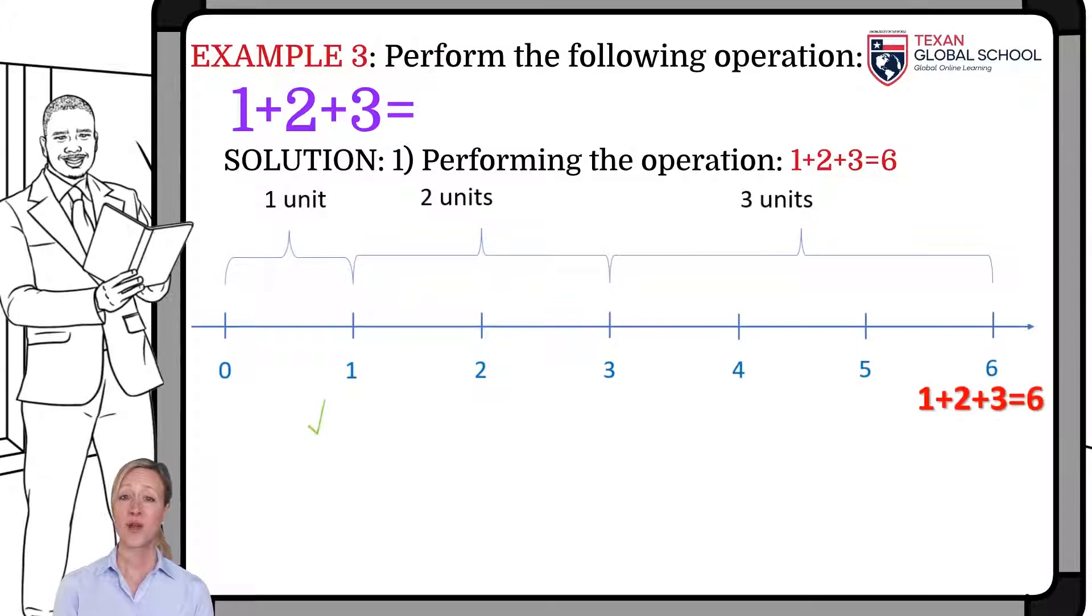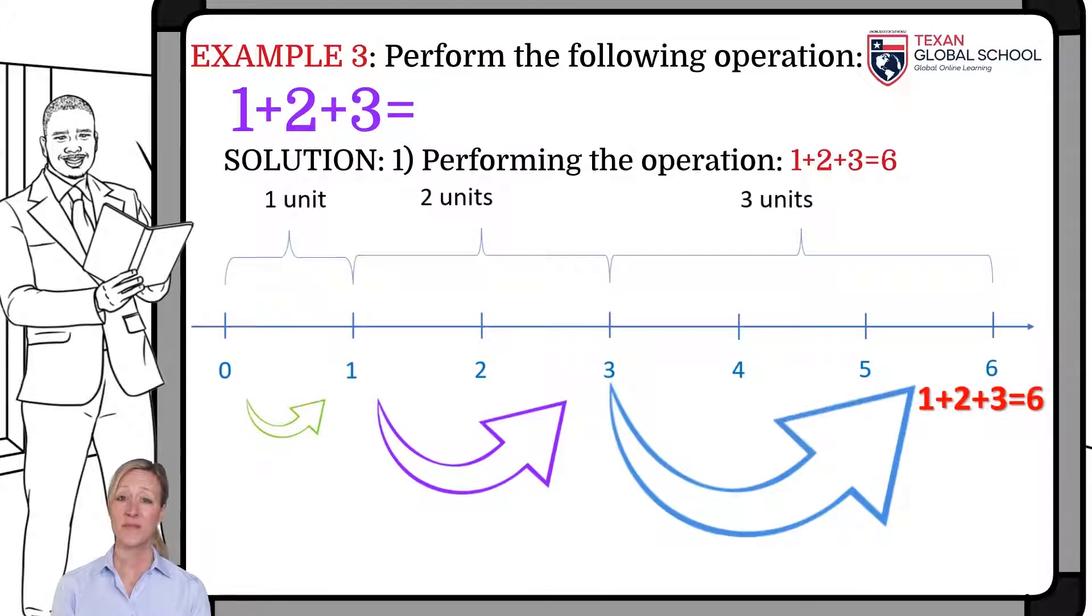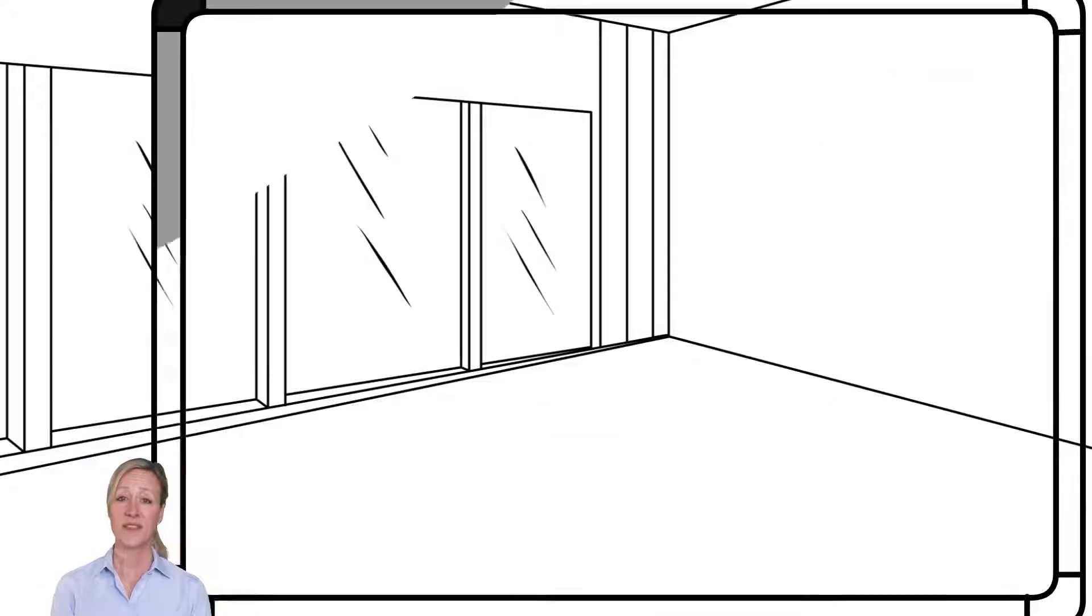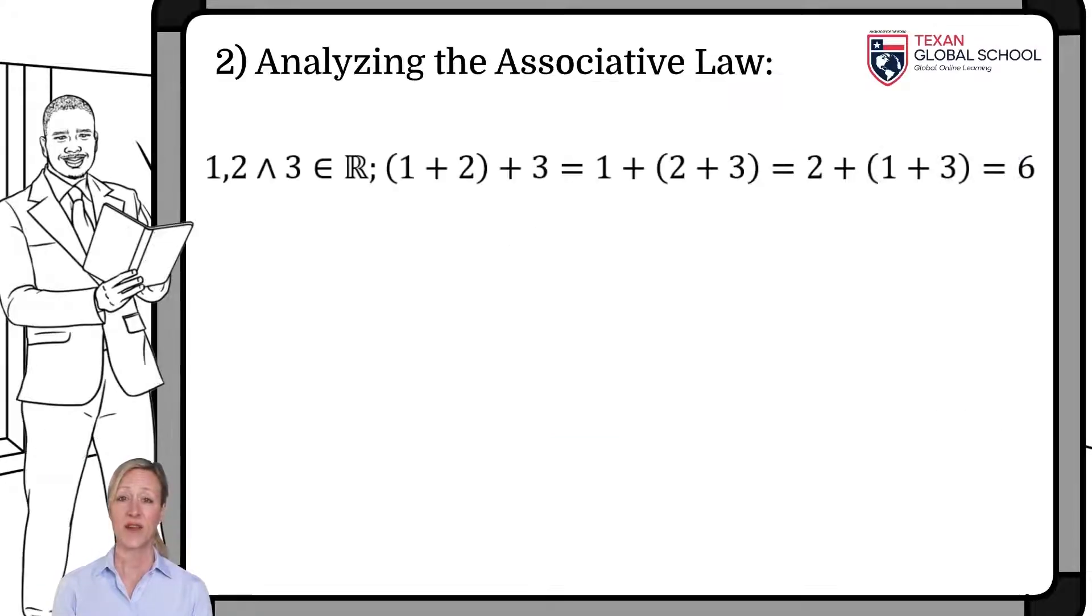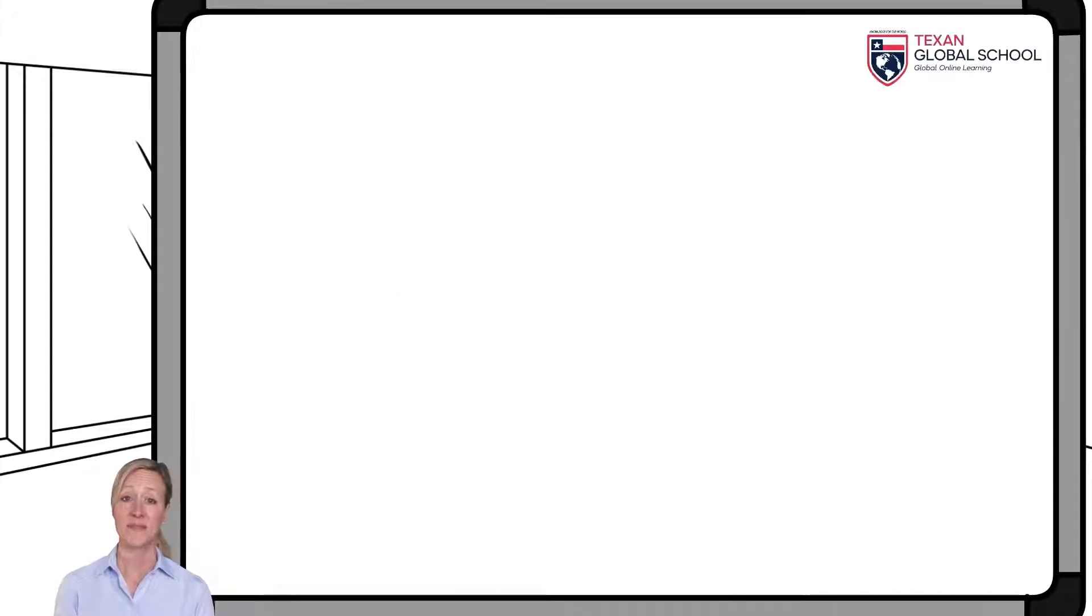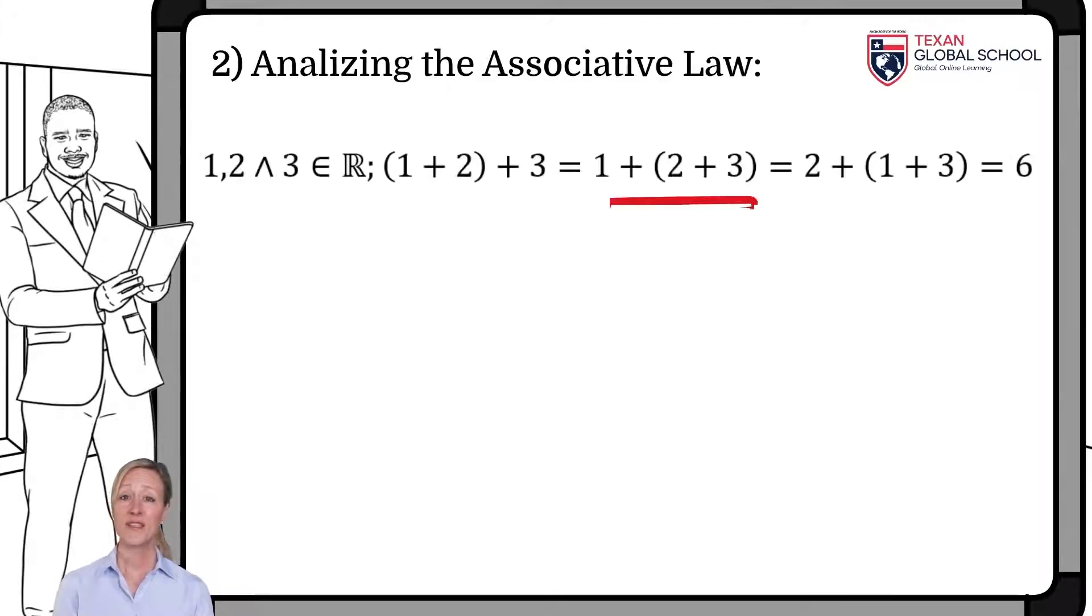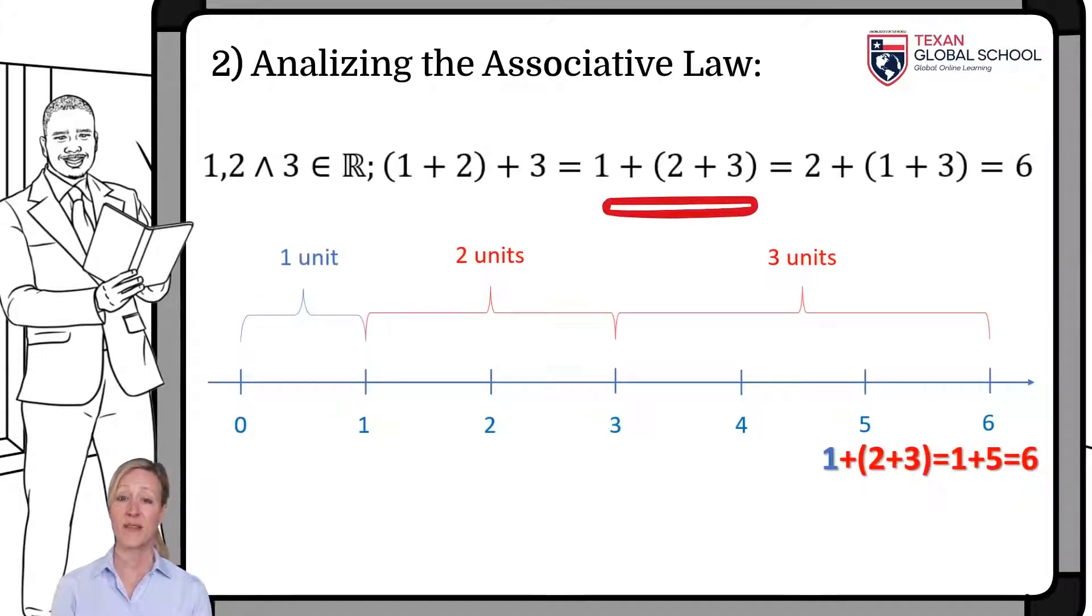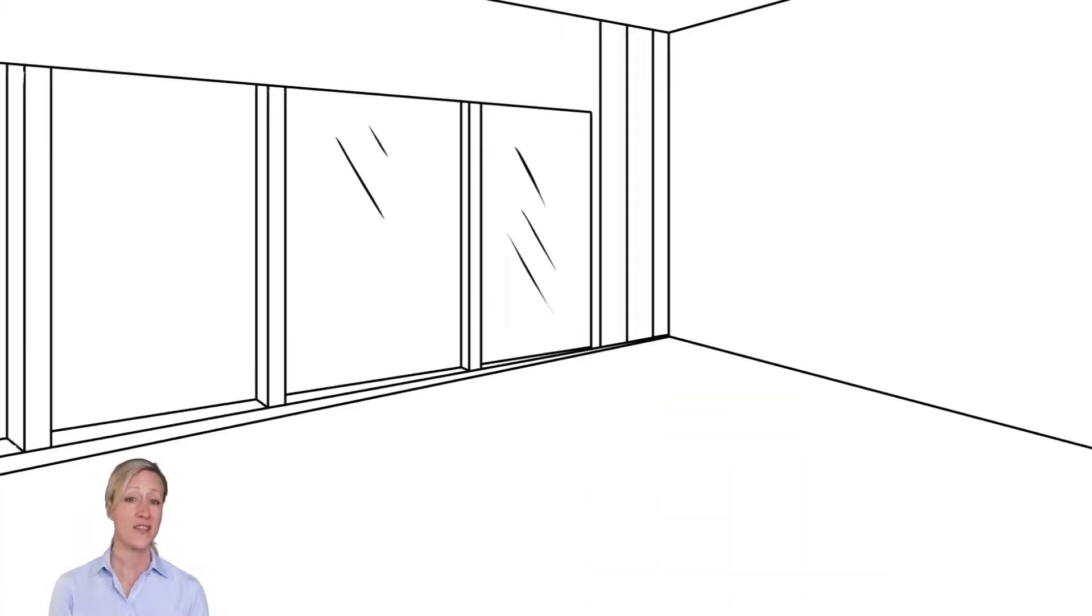When performing the operation 1 plus 2 plus 3, we first draw the number line. We indicate 1 unit, then 2 and finally 3 units, obtaining as a result 6 units. Using the associative law, we can group in another way. We can then associate 1 plus 2, and add the result with 3, also obtaining 6. Another way to associate is grouping 2 plus 3, and to the result we add 1. In this way, we also obtain 6 units.